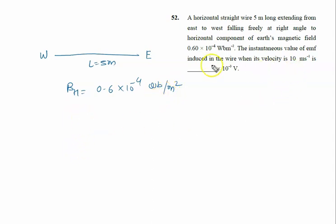The instantaneous value of the EMF induced in the wire when its velocity is 10 meters per second. The induced EMF is given by BVL, where B means Bh, so Bh is 0.6 × 10^-4.